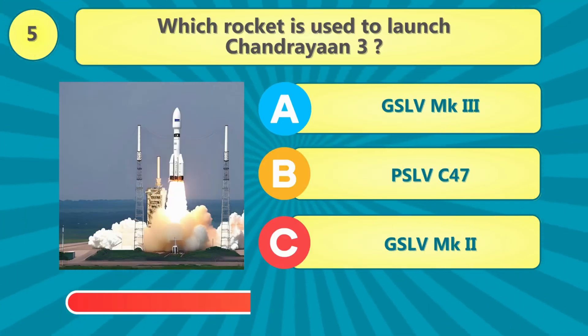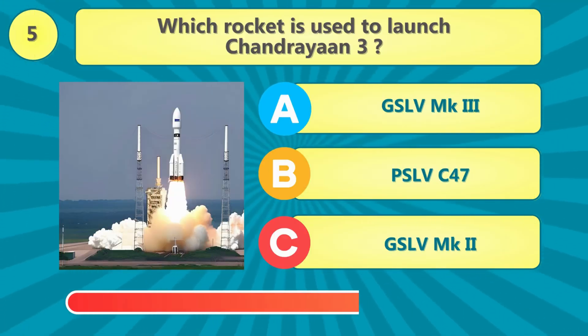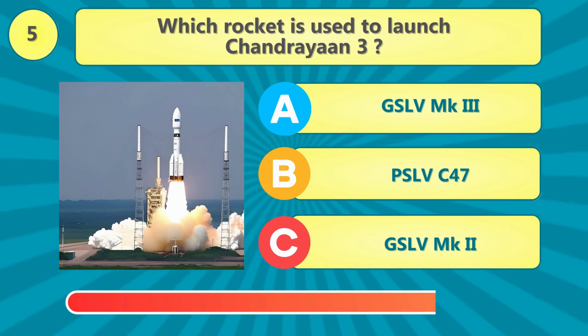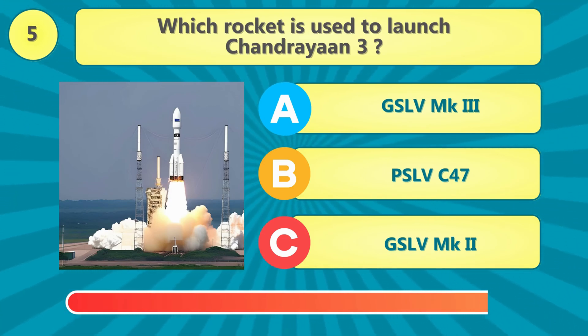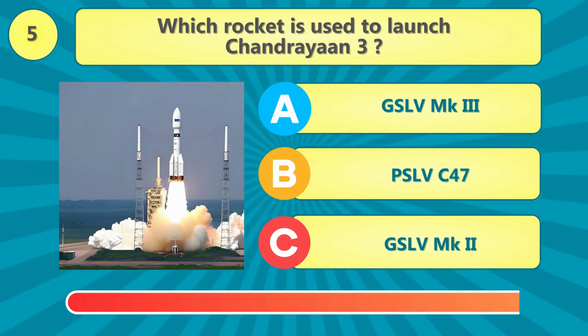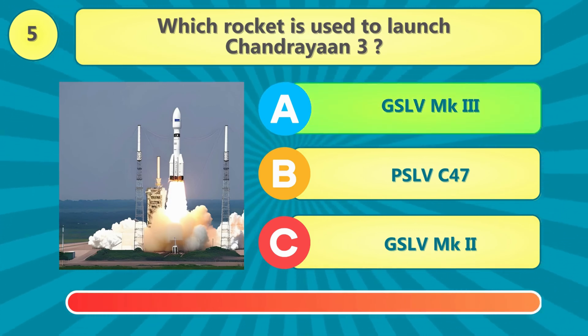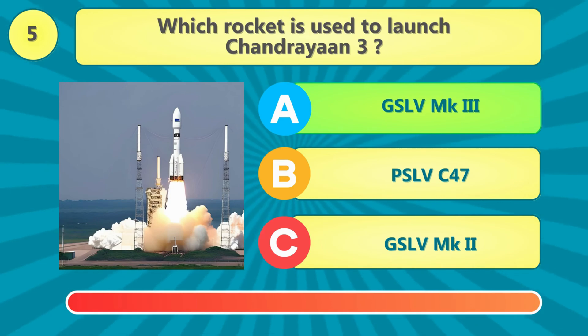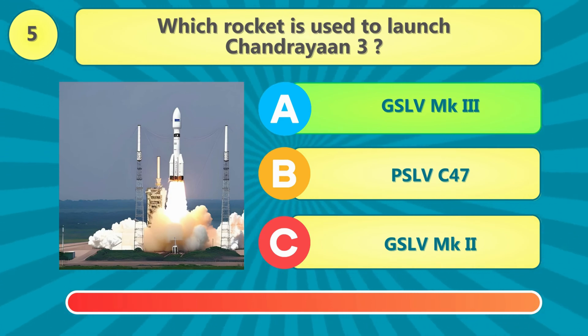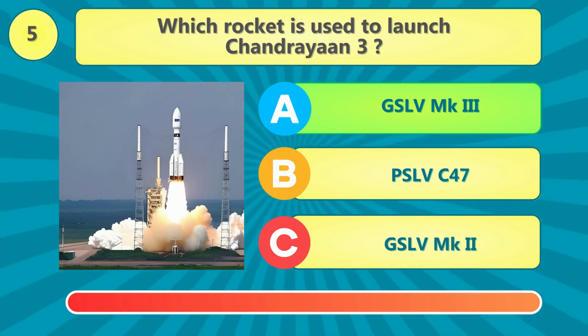Which rocket is used to launch Chandrayaan 3? The answer is GSLV MK3.